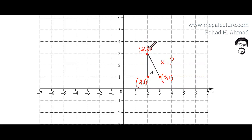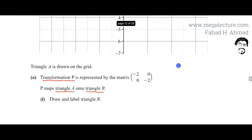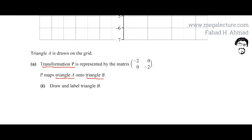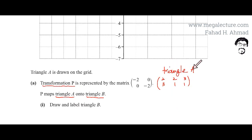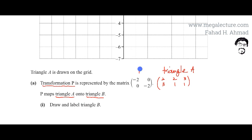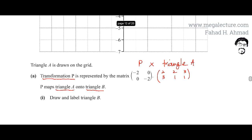The first thing I'm going to do is create a matrix for Triangle A. I'll take the three points and construct a matrix where the first row is the x-coordinates and the second row is the y-coordinates. The three points are (2,3), (2,1), and (3,1). I'll multiply this coordinate matrix by transformation P to get Triangle B.